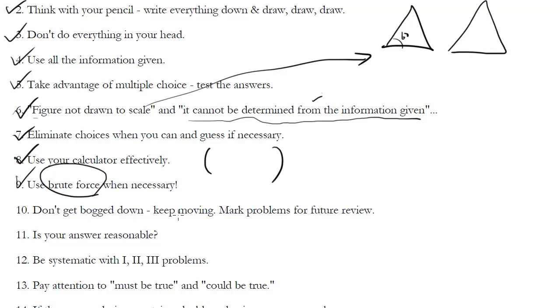Again, don't get bogged down. Keep moving. Mark problems for future review. If you're working on a problem and you don't know what to do with it, circle it and come back. If you're working on a problem and you get an answer but you're kind of uncertain about it, instead of spending time then confirming it, circle it and come back. Just keep moving. Don't get bogged down.